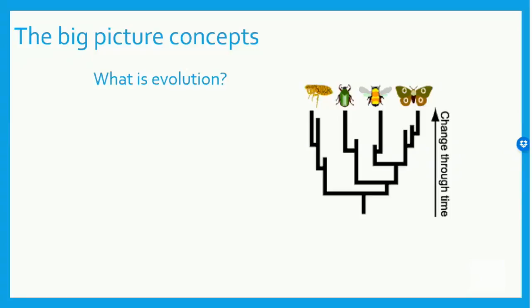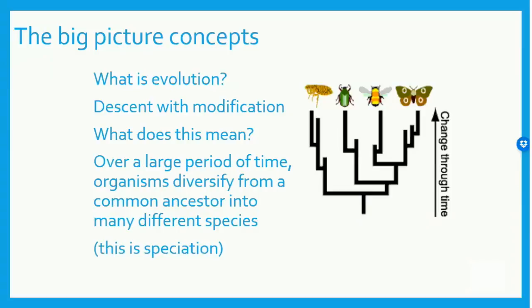First, what is evolution? The picture here is a small hint, but take 30 seconds to come up with your own definition of evolution. Descent with modification is a quick, concise definition of evolution. Another way to word it is that over a large period of time, organisms diversify from a common ancestor into many different species. This diversification is called speciation.